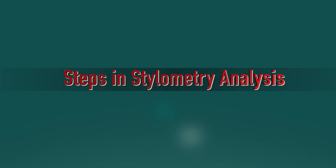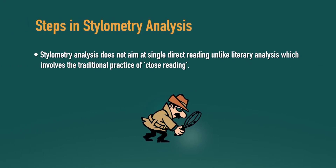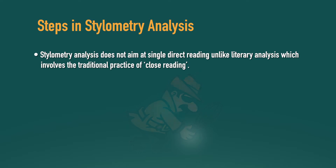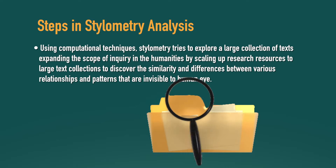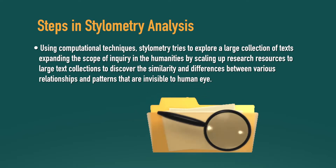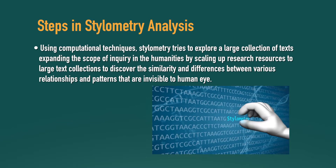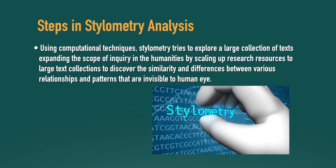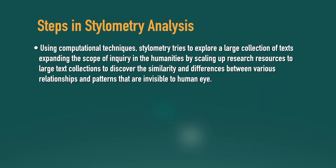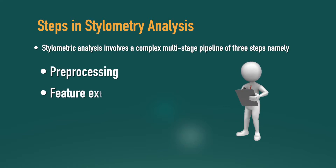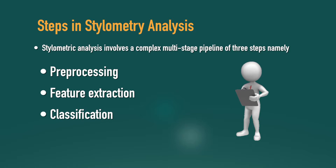Now let's move on to the steps in stylometry analysis. Stylometry analysis does not aim at single direct reading, unlike literary analysis which involves the traditional practice of close reading. Using computational techniques, stylometry tries to explore a large collection of texts, expanding the scope of inquiry in the humanities by scaling up research resources to large text collections to discover similarities and differences — relationships and patterns that are invisible to normal human eyes. Stylometric analysis involves a complex multi-stage pipeline of three steps: pre-processing, feature extraction, and classification.